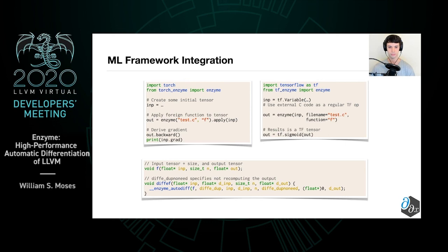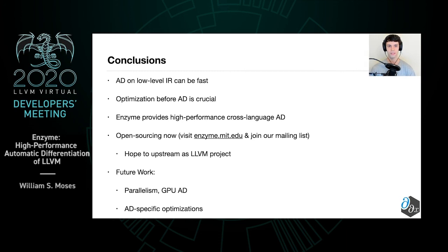Overall, we show that AD on low-level IR such as LLVM can in fact be fast, and this is possible because of the optimization done before AD. Additionally, Enzyme is able to perform high-performance cross-language AD by leveraging LLVM's wide variety of supported languages. We're now planning on open sourcing Enzyme, so please visit enzyme.mit.edu for more information and please join our mailing list. We also hope to upstream this as an LLVM project in the near future. Additional future work includes extending Enzyme to support parallelism, as well as GPU automatic differentiation since LLVM does support GPU instructions. We also hope to explore additional AD-specific optimizations.